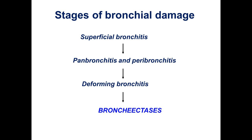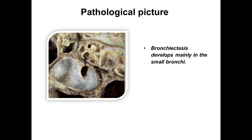There are stages of bronchial damage. First is superficial bronchitis, when inflammation involves only the superficial or mucous membrane of the bronchus. Then peribronchitis occurs, when the inflammatory process covers all bronchial layers, forming deforming bronchitis and bronchiectasis — enlargement of the bronchi. Bronchiectasis develops mainly in the small bronchi.